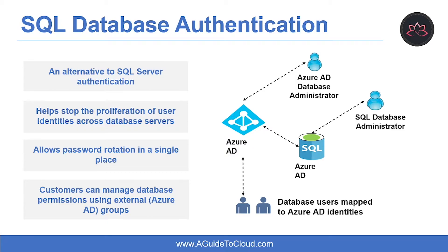You can create a user account in the master database and grant permission in all databases on the server, or you can create them in the database itself. A login is an individual user in the master database to which a user account in one or more databases can be linked. With a login, the credential information for the user account is stored with the login. A user account is an individual account in any database that may or may not be linked to a login. With a user account not linked to a login, the credential information is stored with the user account. Authorization to access data and perform various actions are managed using database roles and explicit permissions. Authorization refers to the permissions assigned to a user and determines what the user is allowed to do, and is controlled by user account database role membership and object level permissions.